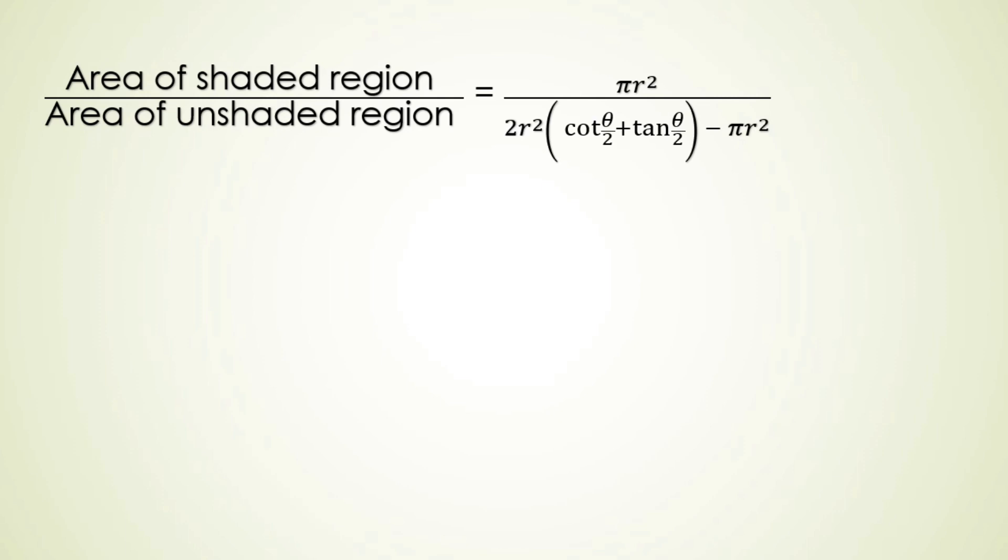And our ratio is equal to pi upon 2 bracket cot theta by 2 plus tan theta by 2 minus pi and that is our solution. Let's move to our another question.